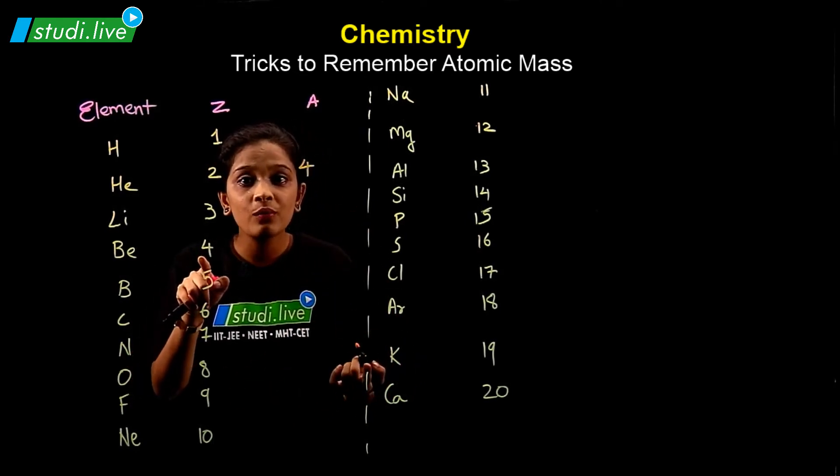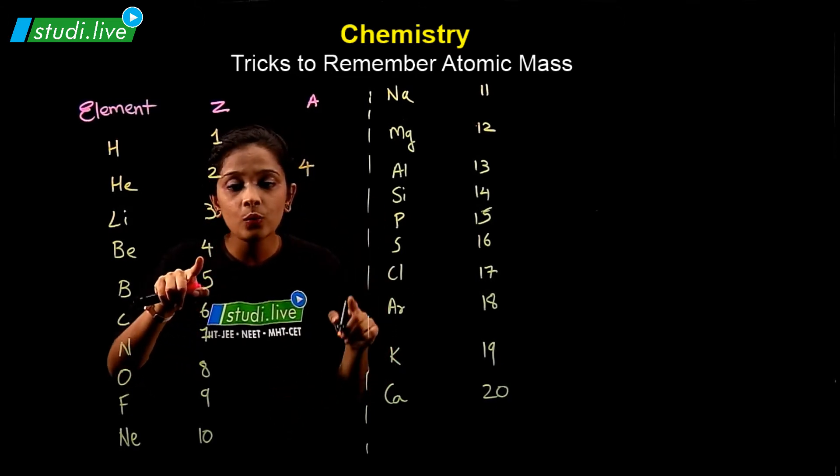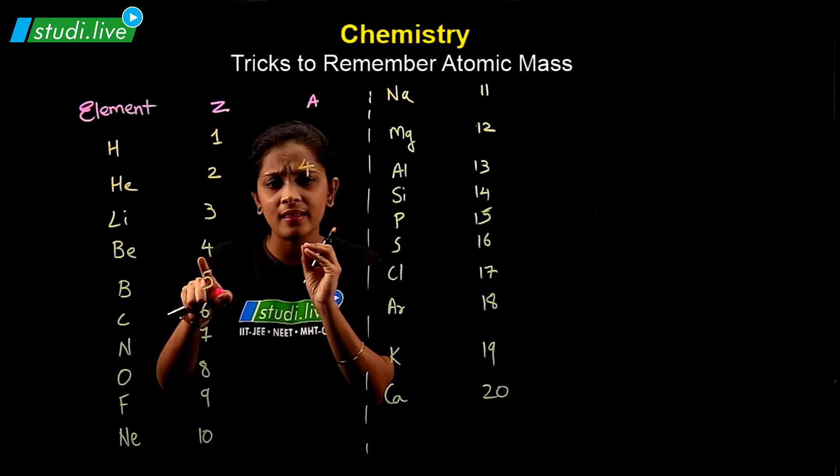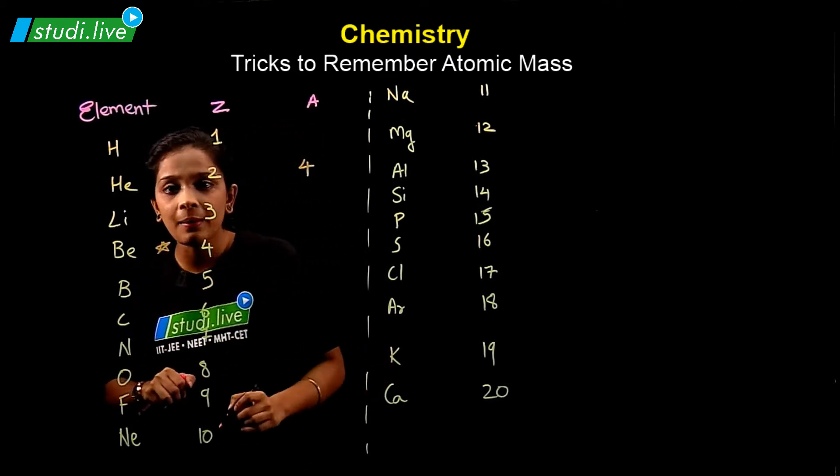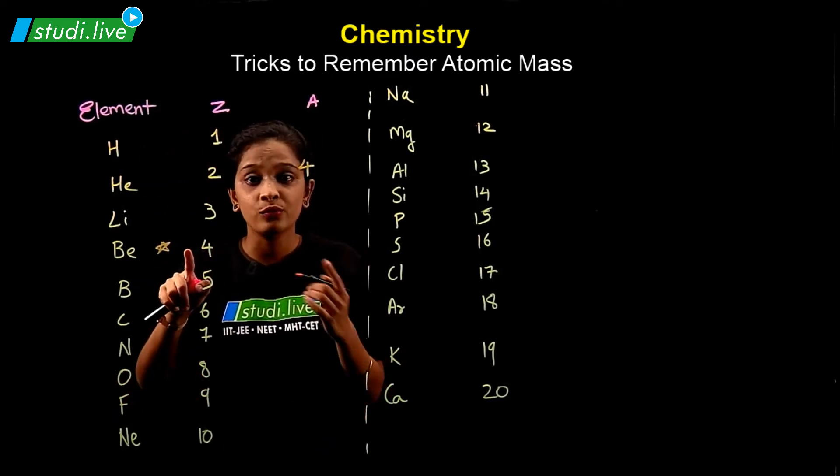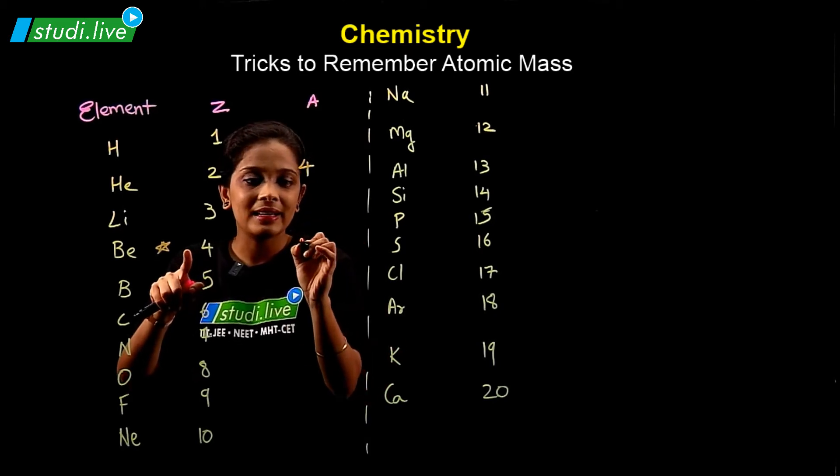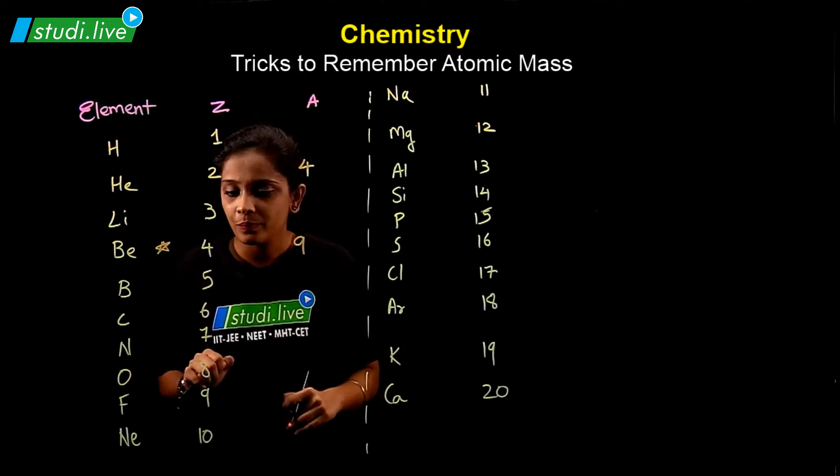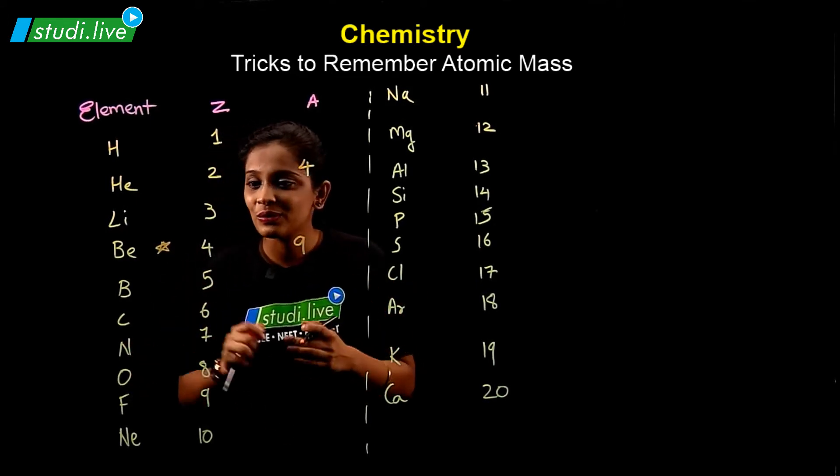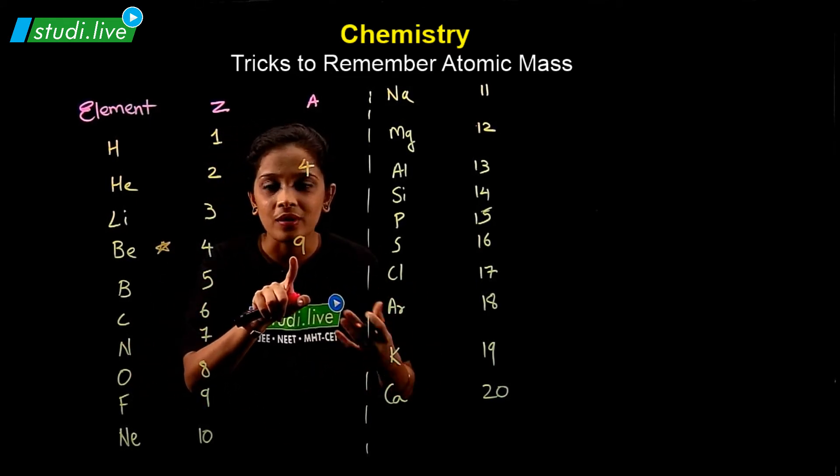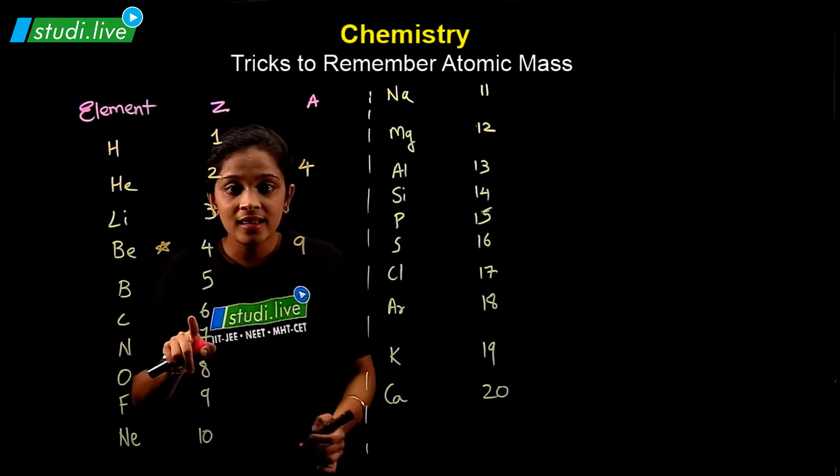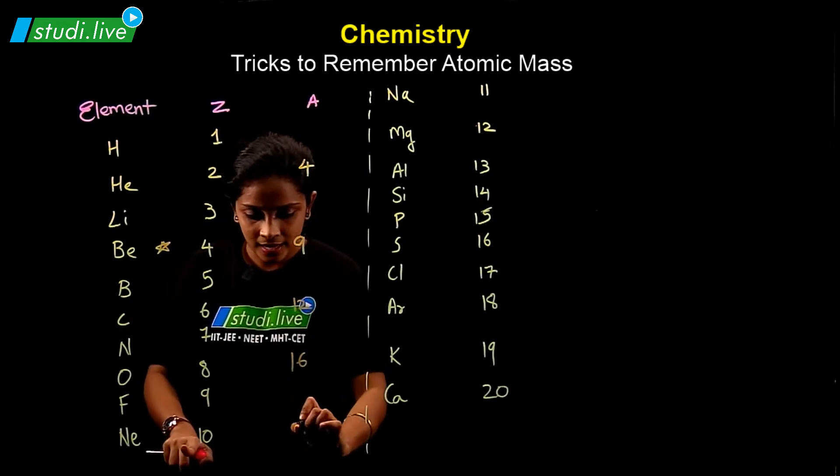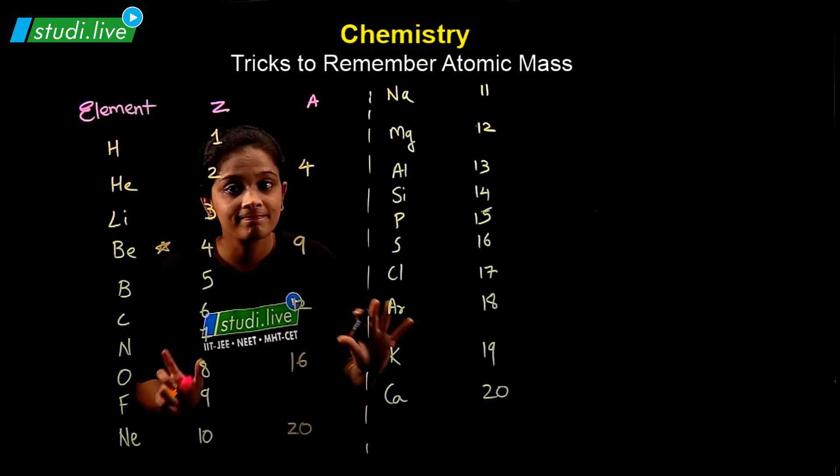So four is going to be what, student? It is going to be eight, but in this case a little bit of exception is there. Because of this exception, rather than eight, we are going to write it as nine. Am I clear with this exception? Exceptions are there in chemistry, so consider it as the exception. Carbon 6, so double, 12. Eight, 16. Ten, you take 20. Easy.